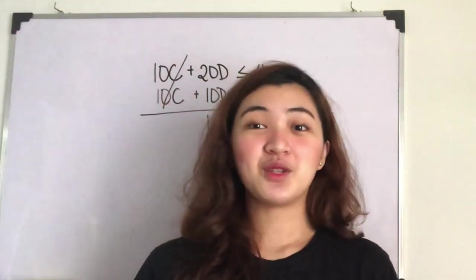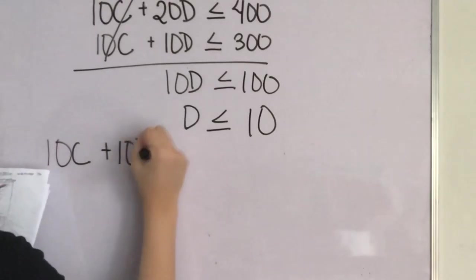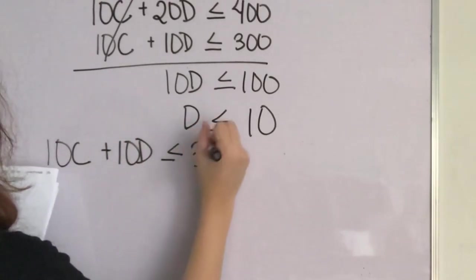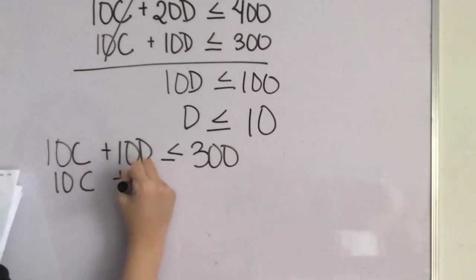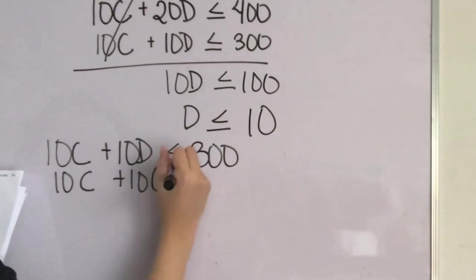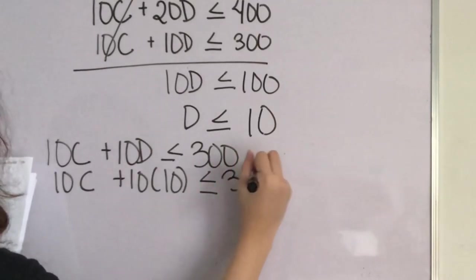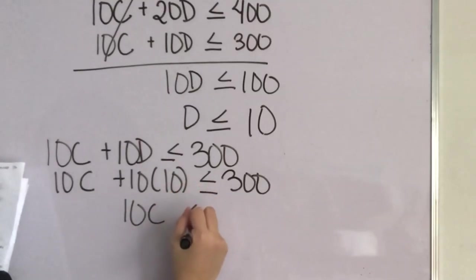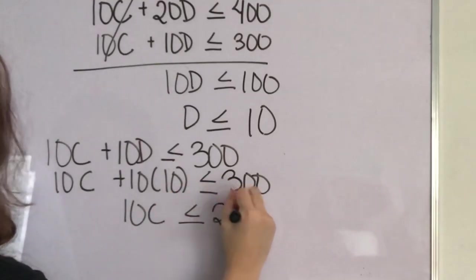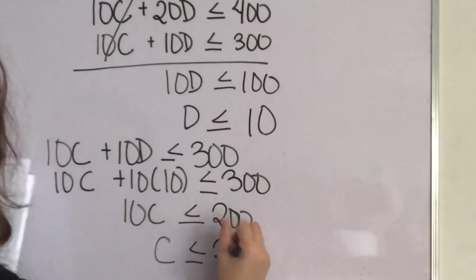Next, we will use the second equation to find C. 10C plus 10D is less than or equal to 300. 10C plus 10, as you can see over here, is less than or equal to 300. 10C plus 100 is less than or equal to 300. 10C is less than or equal to 200, and then here we have C is less than or equal to 20.